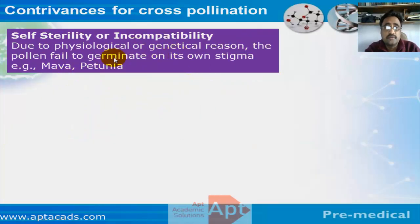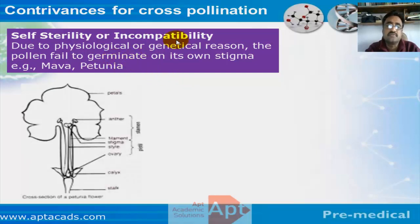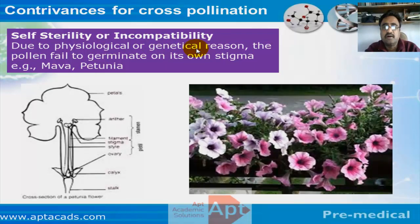There is another mechanism for ensuring cross-pollination: self-incompatibility. In certain cases, for physiological as well as genetic reasons, the pollen fails to germinate on the same stigma. The typical examples are petunia and mawa, in which pollen grains of the same flower fail to germinate on the stigma of the same plant, so they must go to another flower to ensure pollination.